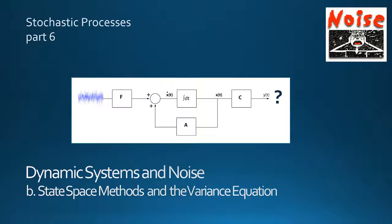Hi. This is the second half of part 6 of my sequence on stochastic processes. It's about the response of dynamic systems to noise, and in the development of the variance equation it also provides some of the background to the analog Kalman filter.